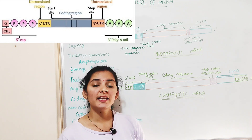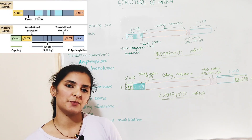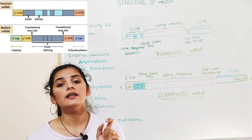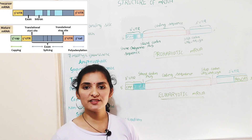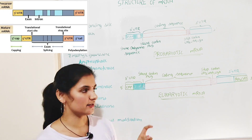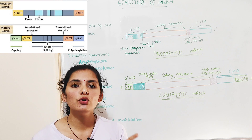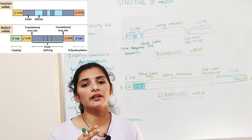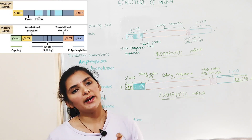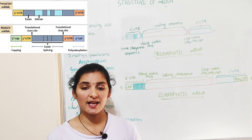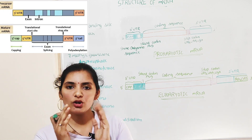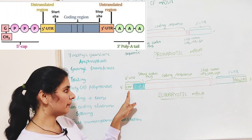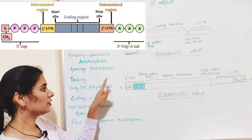Apart from this structure, the mRNA produced soon after transcription — called the primary transcript or hnRNA — also has non-coding sequences in addition to coding sequences. Coding sequences are called exons and non-coding sequences are called introns. These non-coding sequences are later removed and the coding sequences are joined by a complex known as the spliceosomal complex, and that process is known as splicing.